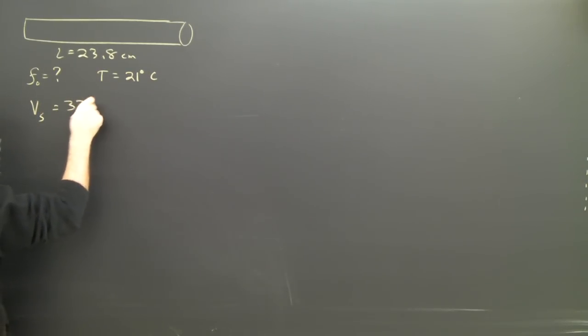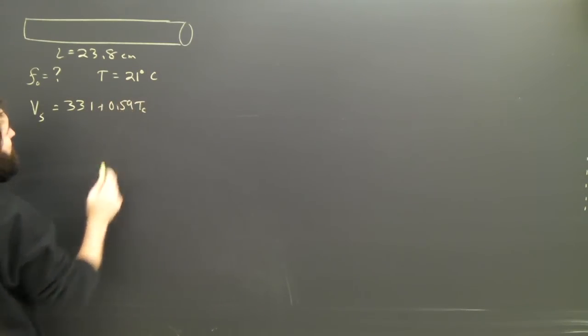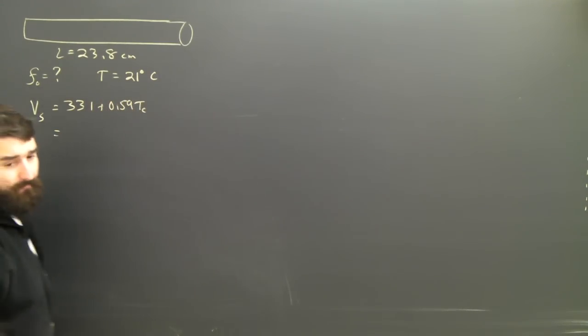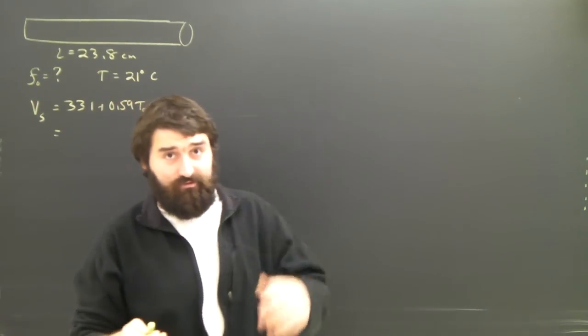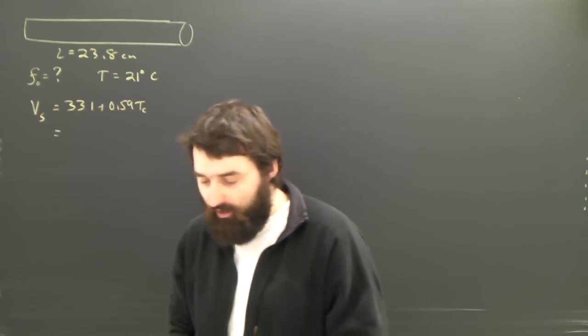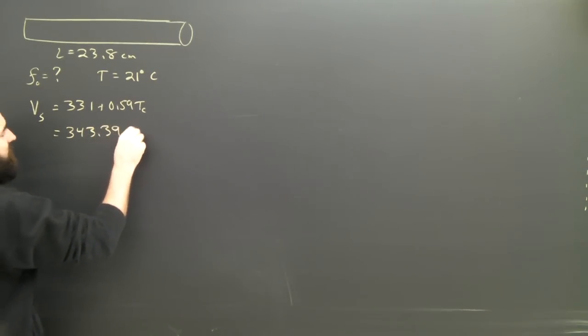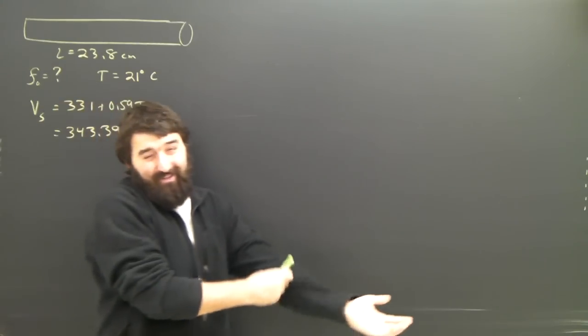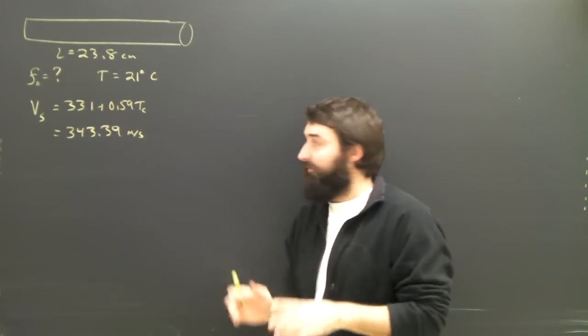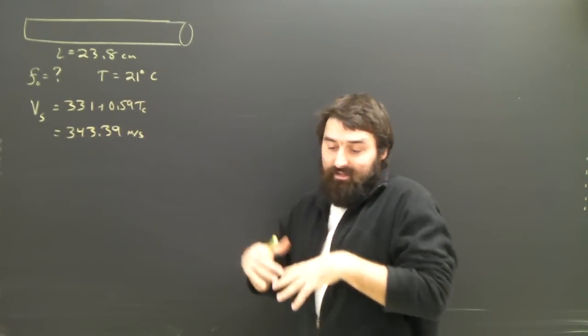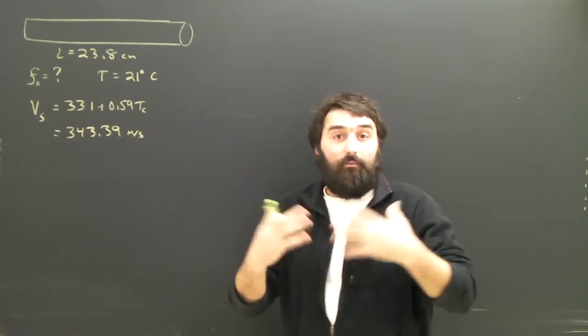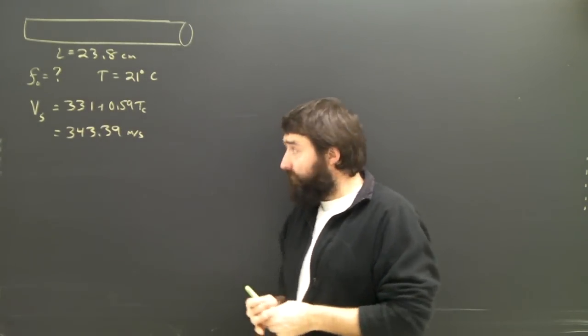So Vs is 331 plus 0.59 T. No problem. That's assuming standard temperature and pressure and all those things. If we dump in the numbers, we get 343.39 meters per second, which is more sig figs than we actually have, but that's fine. I'll just keep it as that to get as close to the answer as possible, and then we will round it later on.